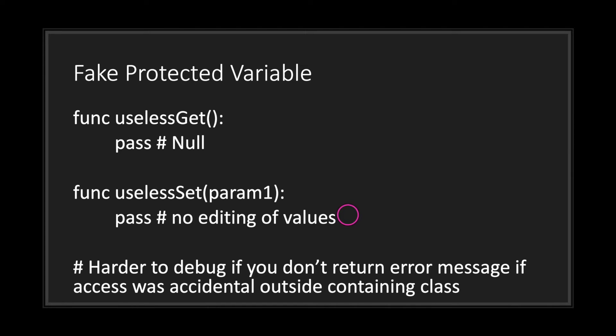I recommend you don't use pass, because it's harder to debug. The setter method won't actually throw an error if you accidentally try to access a fake protected variable, and the getter function will return null — so when debugging you may not know where that null value came from. It's best to print something to the console so you can see if you accidentally access a fake protected variable from outside its class.